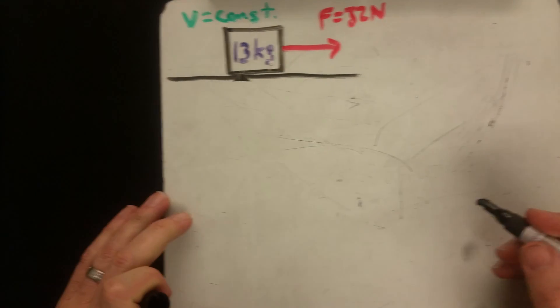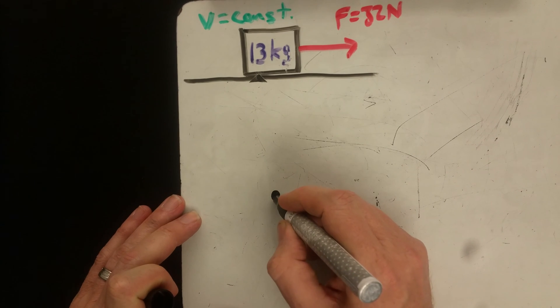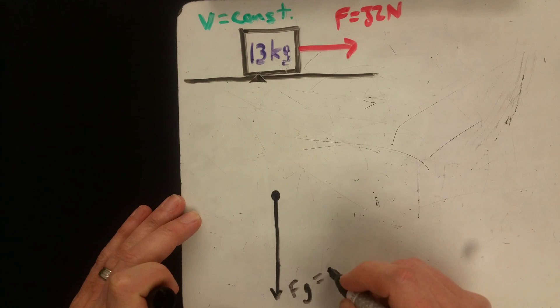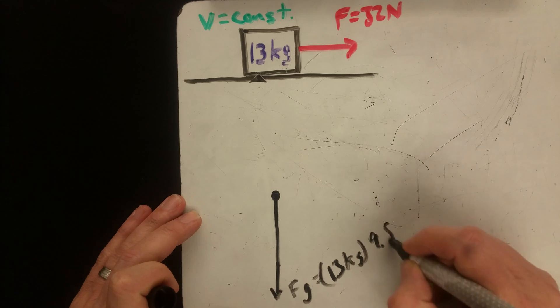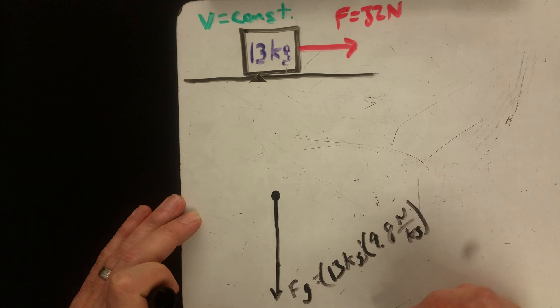If we start with our force diagram, we know we're going to have a force of gravity down, and that's going to be our mass times 9.8 newtons per kilogram, or 127.4 newtons.